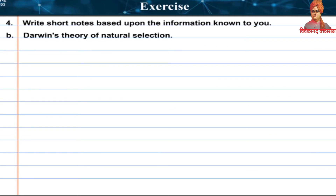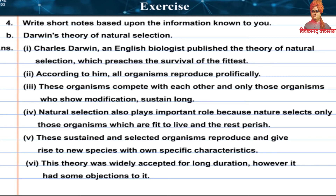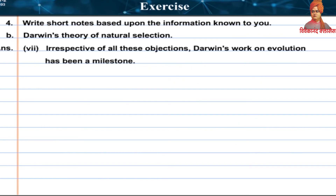B: Darwin's Theory of Natural Selection. Charles Darwin, an English biologist, published the theory of natural selection, which preaches the survival of the fittest. According to him, all organisms reproduce prolifically, compete with each other, and only those who show modification sustain long. Natural selection plays an important role — nature selects only those organisms which are fit to live and the rest perish. These sustained and selected organisms reproduce and give rise to new species with their own specific characters. This theory was widely accepted for a long duration, though it had some objections. Irrespective of all these objections, Darwin's work on evolution has been a milestone.